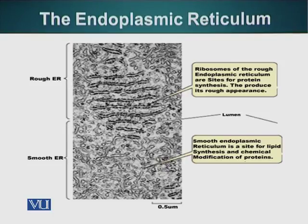For example, if a protein molecule has to go to lysosomes, certain carbohydrate molecules will be attached to it. The cellular machinery will recognize this protein, package it in a vesicle, and send that vesicle to the lysosome.